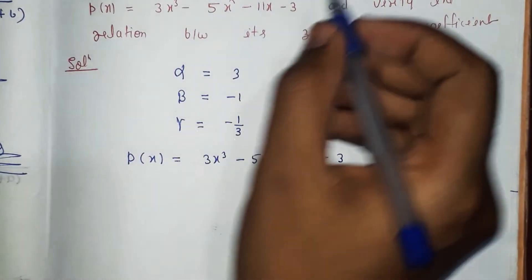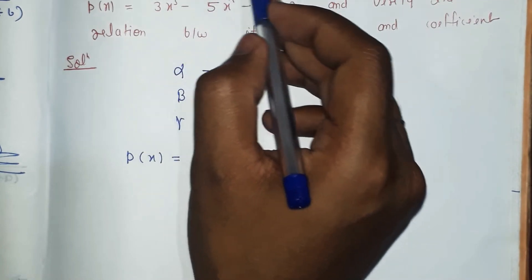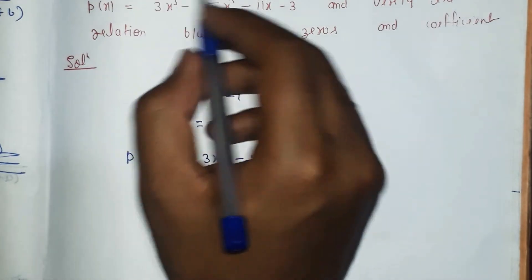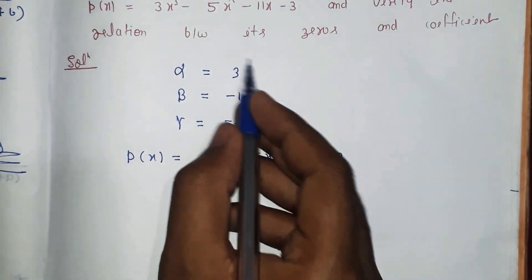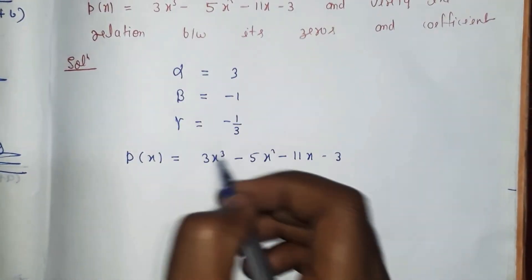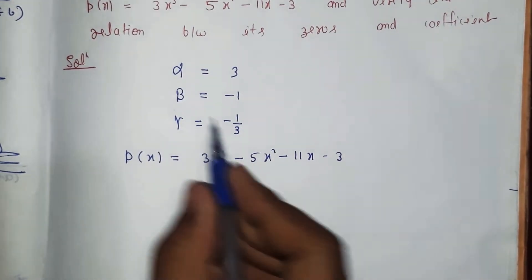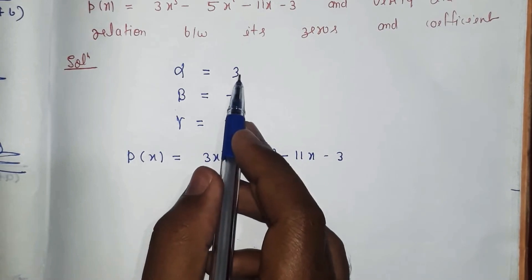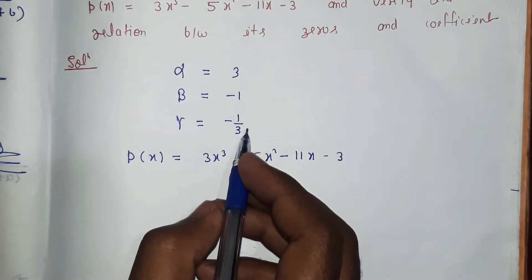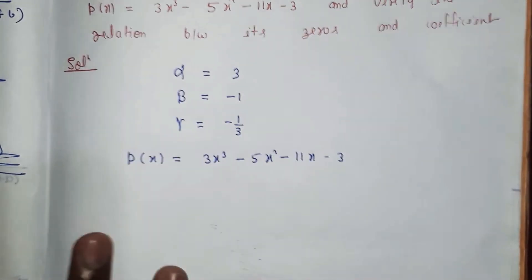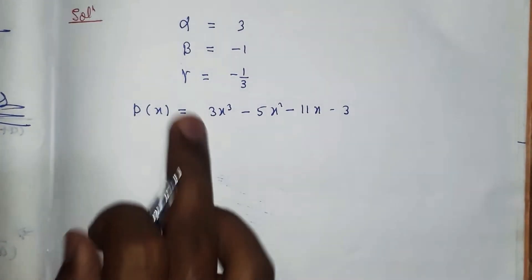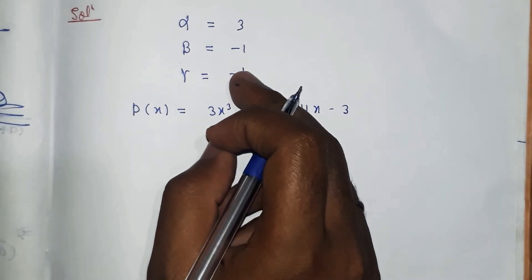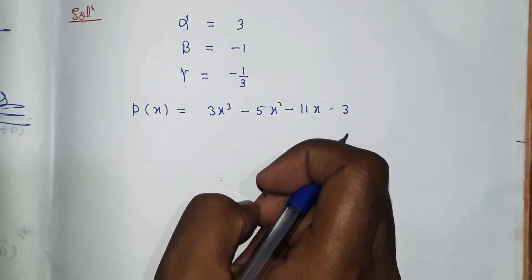First, we need to verify that 3, -1, and -1/3 are the zeros of the cubic polynomial. A value is a zero only when we substitute it into p(x) and get 0. So we will put x = 3, then x = -1, then x = -1/3, and check that 0 is obtained in all three cases.